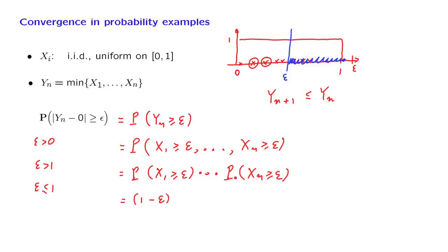And so we obtain 1 minus epsilon for this first term. But because the Xi's are identically distributed, all the other terms that we multiply are also the same. And so the answer is this expression here.